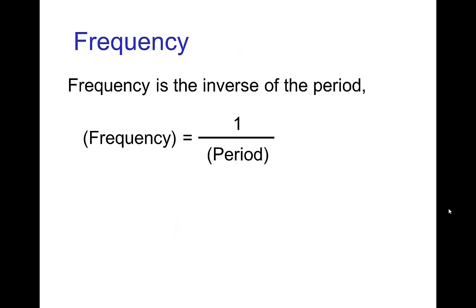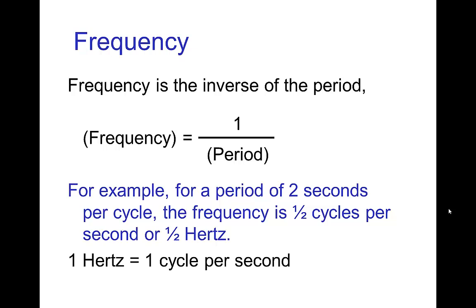A closely related element is the frequency for a cycle. The frequency is just the inverse of the period. So for example, if something has a period of two seconds per cycle, then the frequency is half a cycle per second — frequency is measured in cycles per second, called hertz. So half a cycle per second is the same as one half hertz.